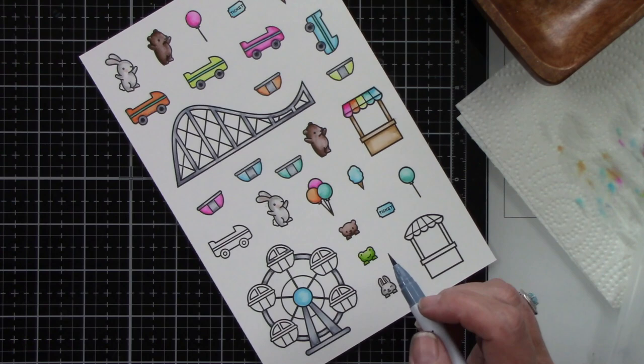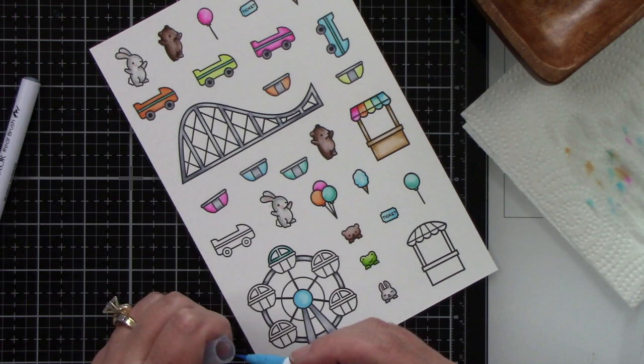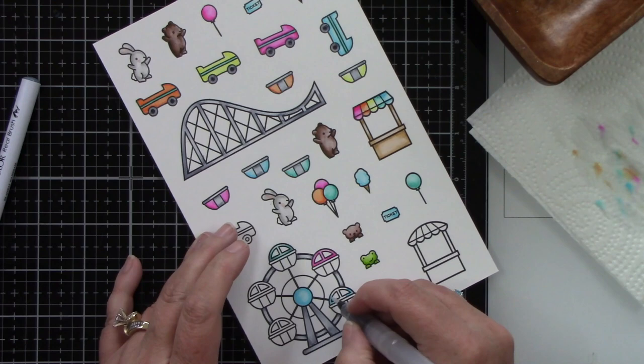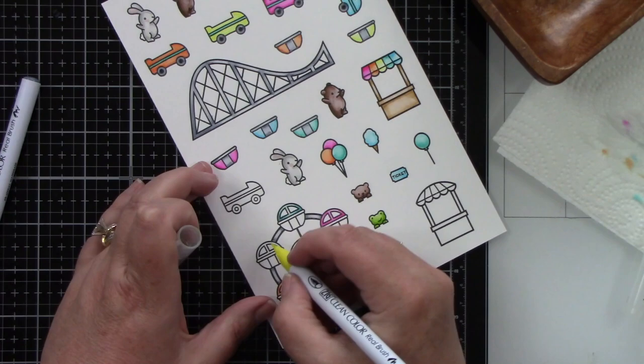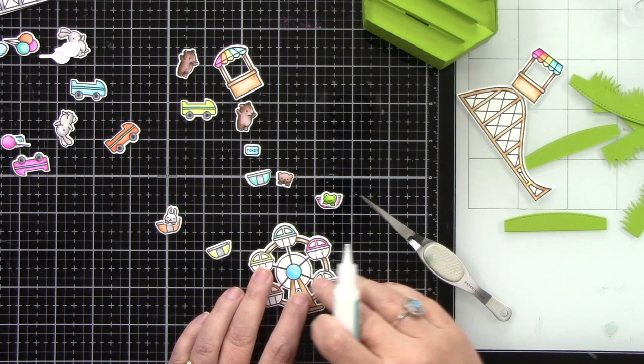So turquoise green, pink, cobalt blue, lemon yellow, and orange. I'm not worried about coloring the bottom because those other ones that we're going to die cut out are going to pop in there. So I used all of the coordinating dies to die cut them out.